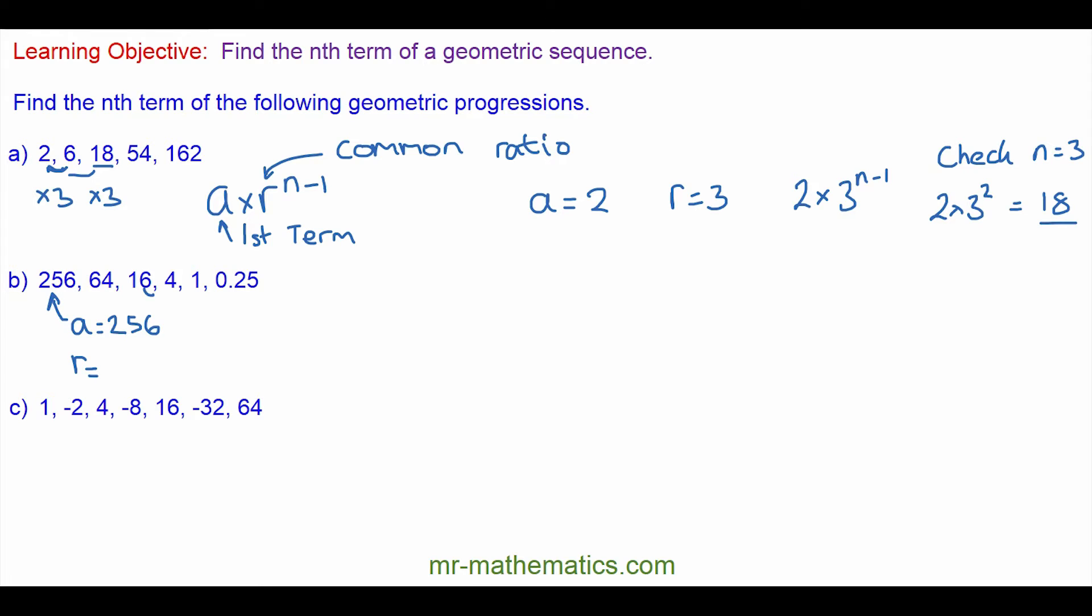The next sequence: a is the first term again, 256, and r is, this time we are dividing by 4, so the common ratio would be 1 quarter. So it's 256 multiplied by 1 quarter to the power of n minus 1.